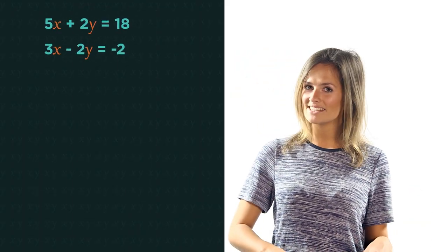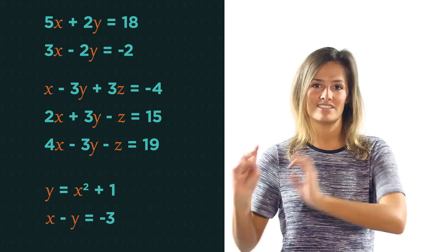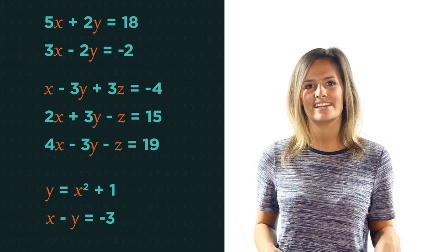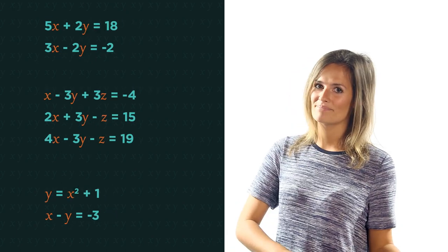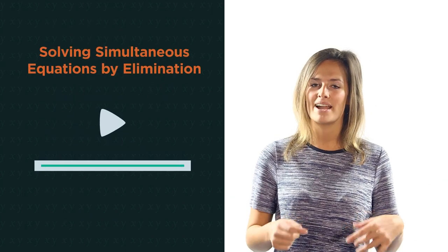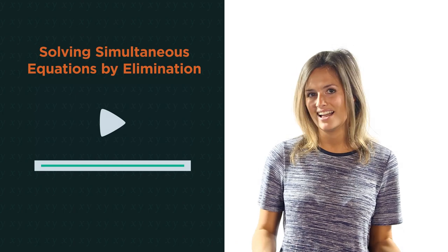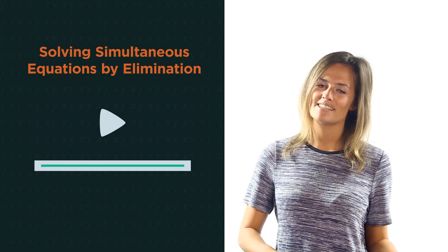In this video we're going to discover how to solve simultaneous equations by substitution. Simultaneous equations are two or more equations with two or more unknowns. They're called simultaneous because they need to be solved at the same time. We saw how to solve them by elimination in this video, however elimination doesn't always work, so that means we need to use substitution.